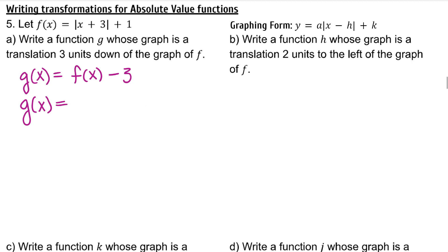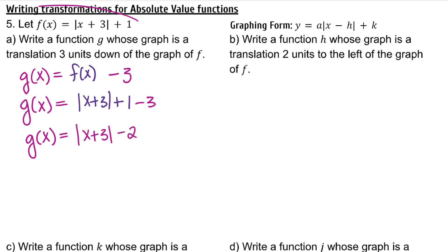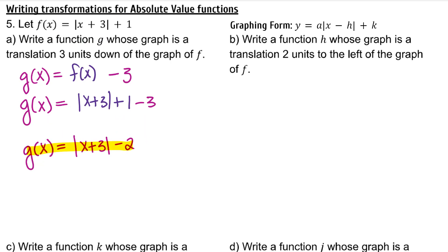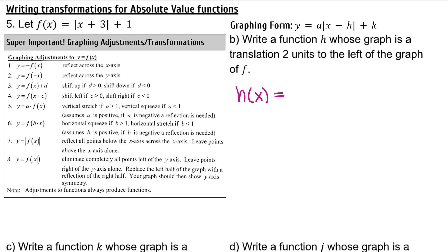Now substitute f(x) and simplify. To move f(x) 3 units down, the graph will be represented by this function. Write a function h whose graph is a translation 2 units to the left of f. This is not the same as a vertical transformation. A horizontal translation is a number being added or subtracted inside the function — inside the absolute value in this case. To write that, we say f(x) — to go 2 units to the left, we will add 2. This is because adding to the x signals a negative H value, which moves to the left.